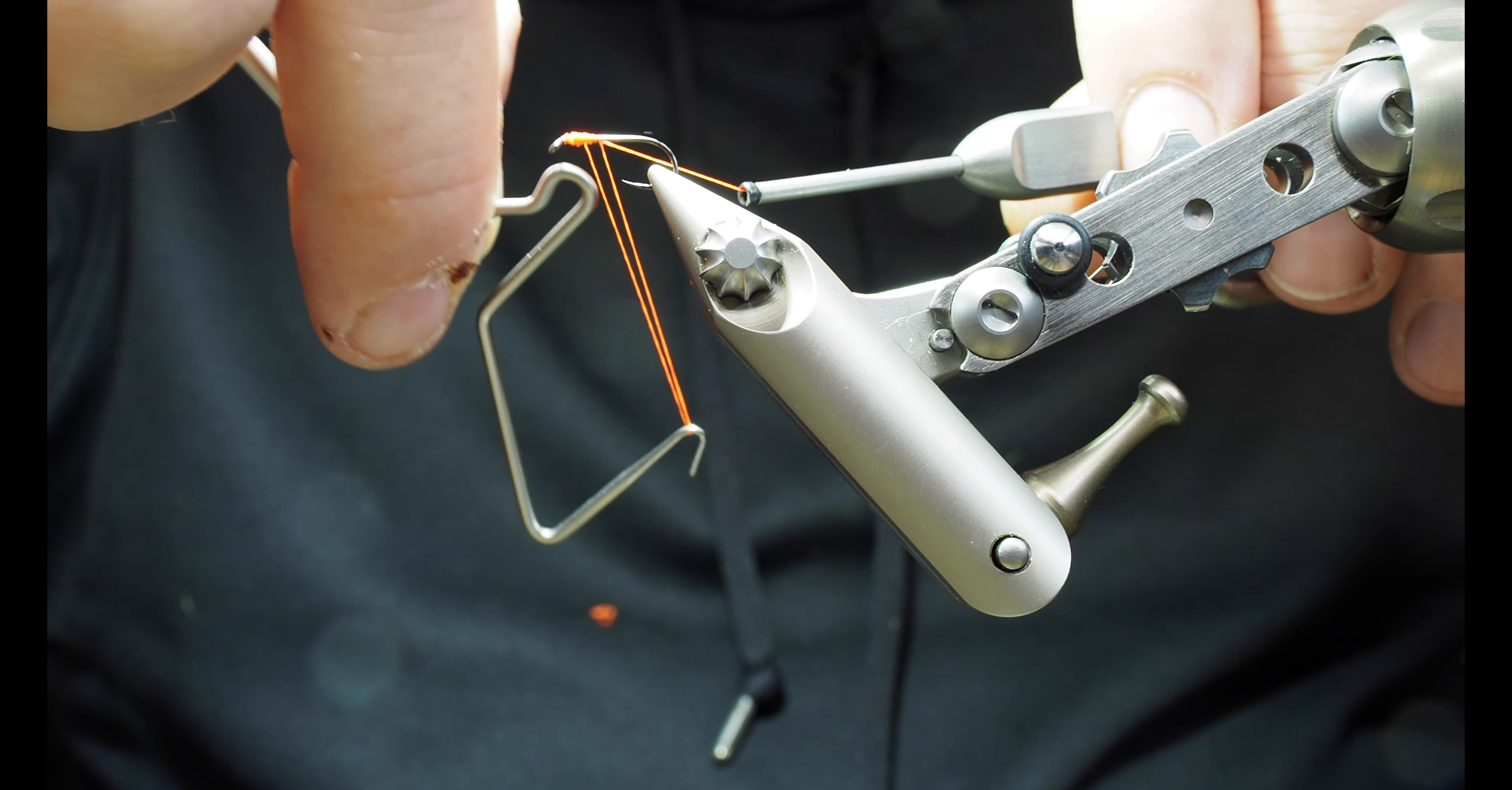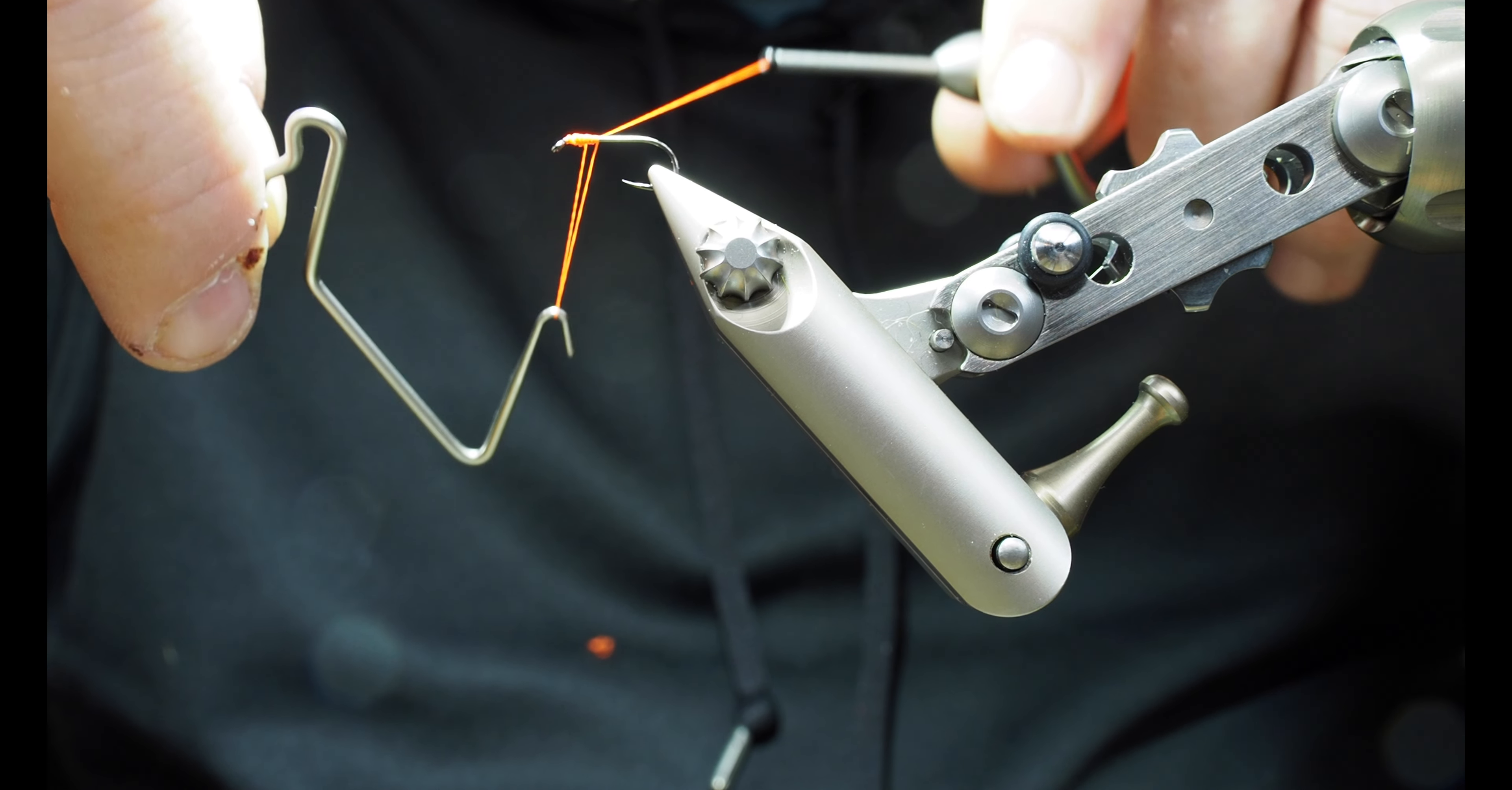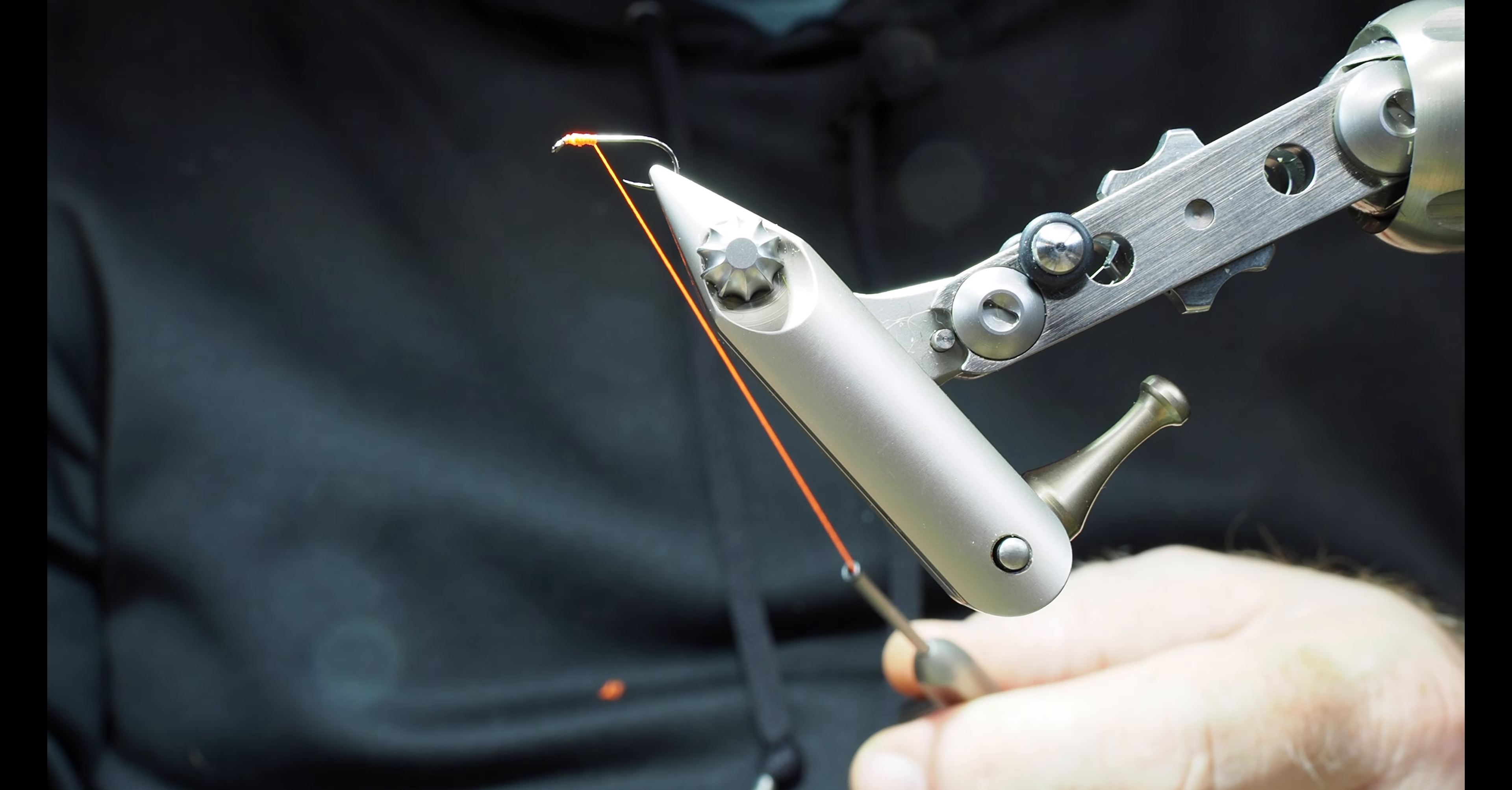I've got two or three turns in. Now I'm going to let it slide off the notch, keep it on the hook of the whip finisher, and then just pull that right into place just like that. And that's how you use a whip finisher.